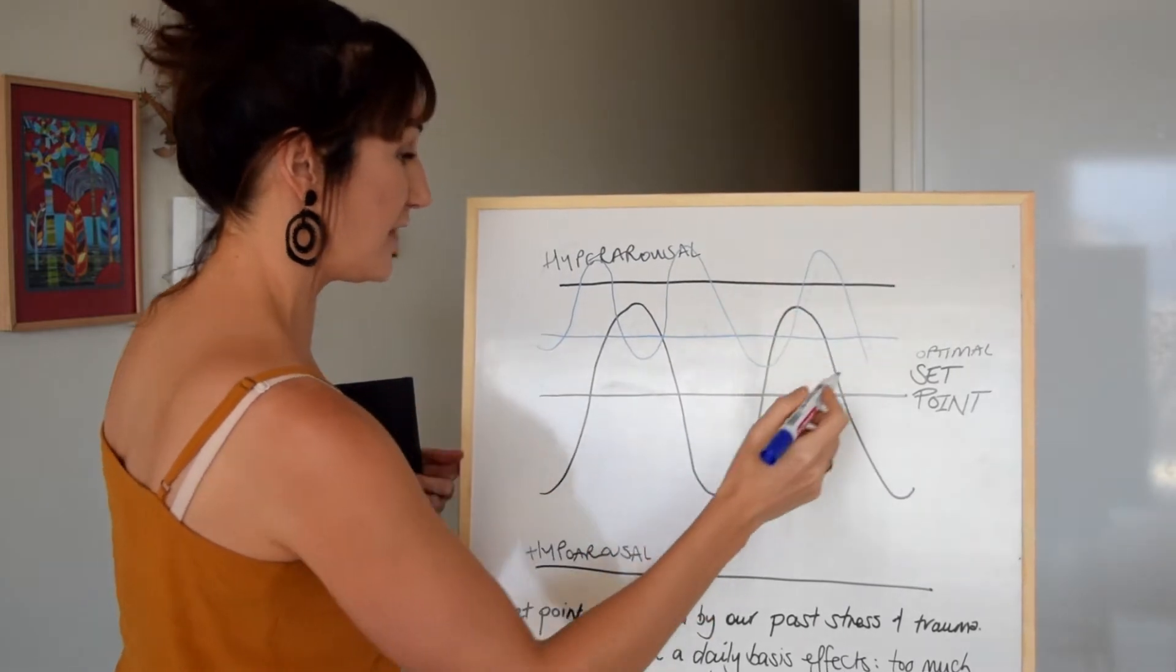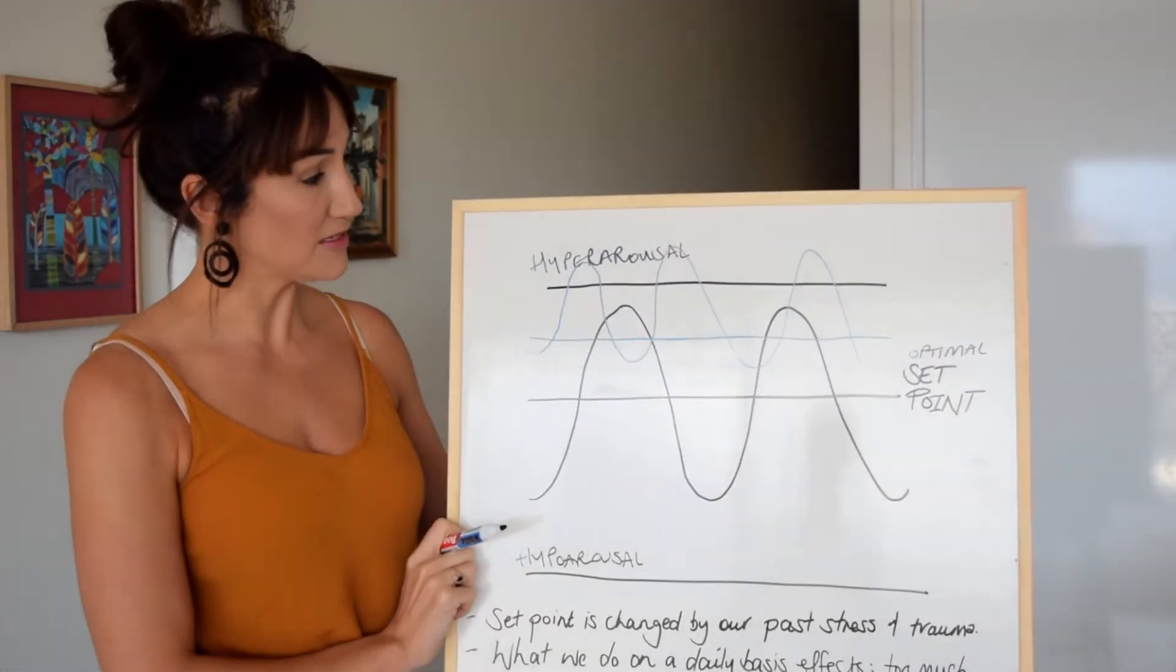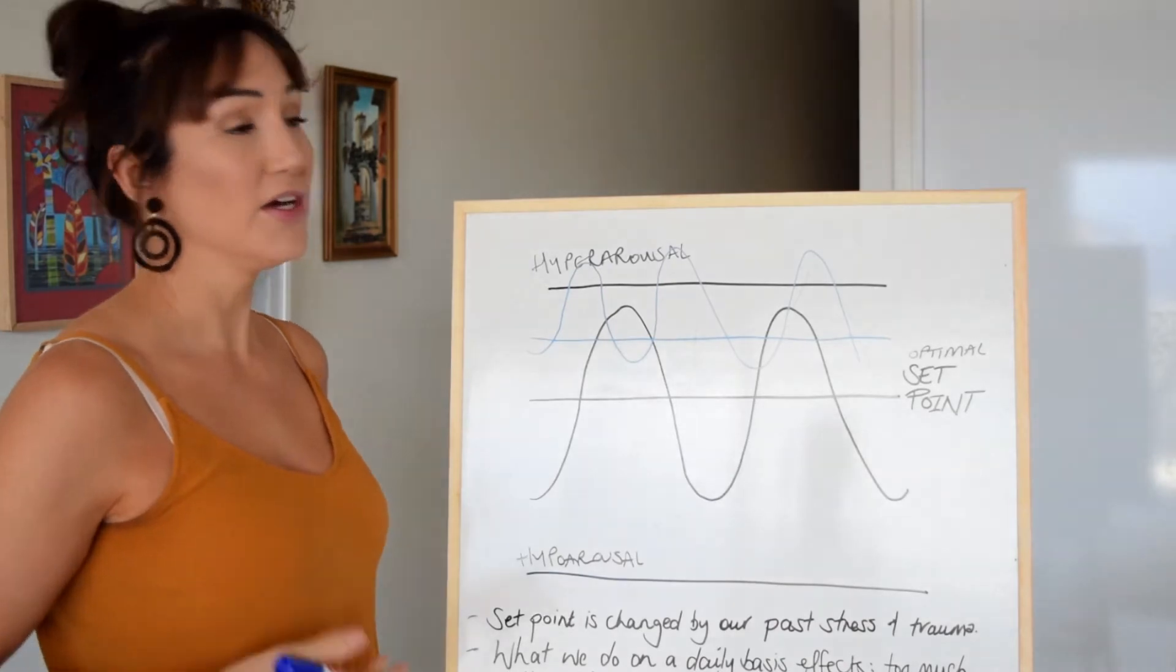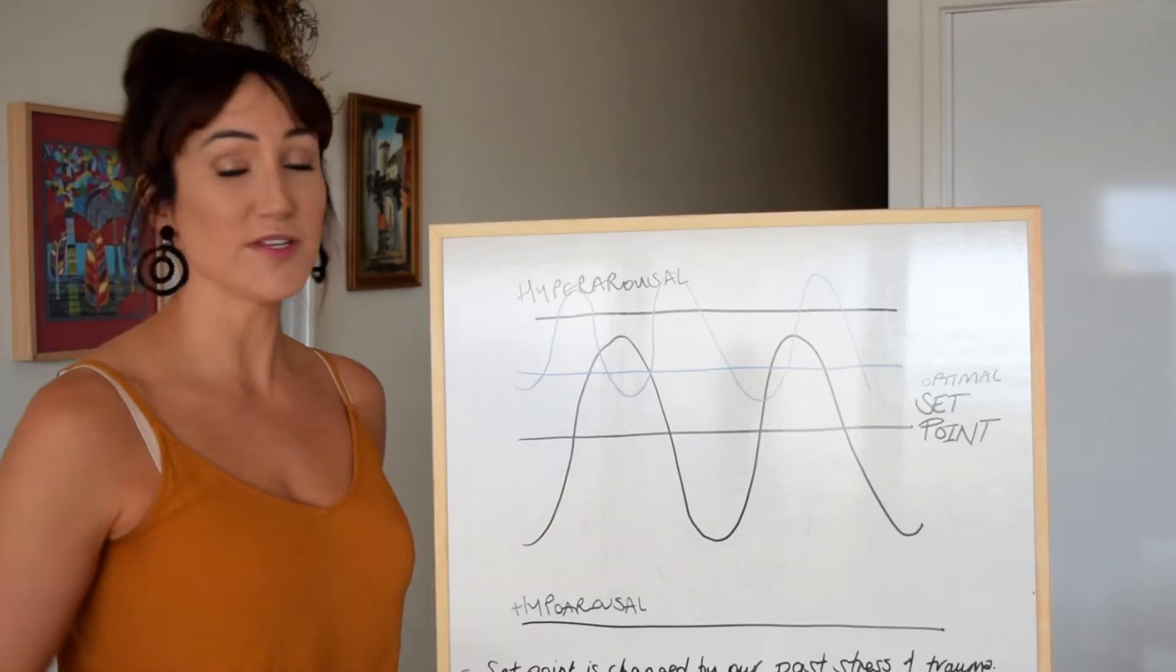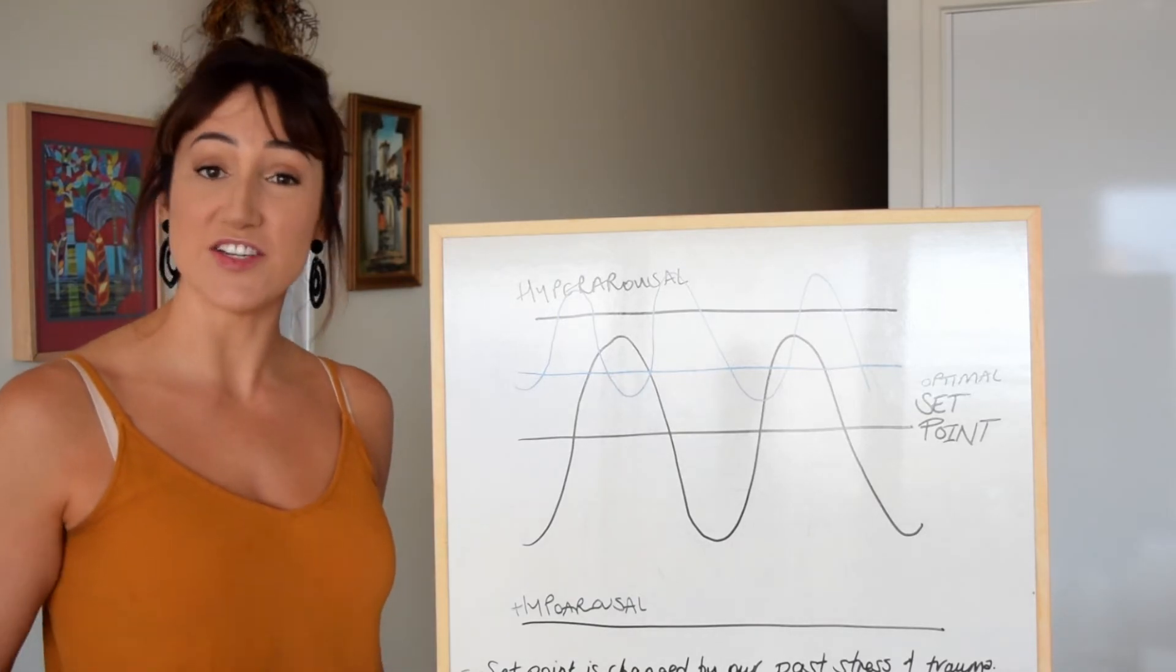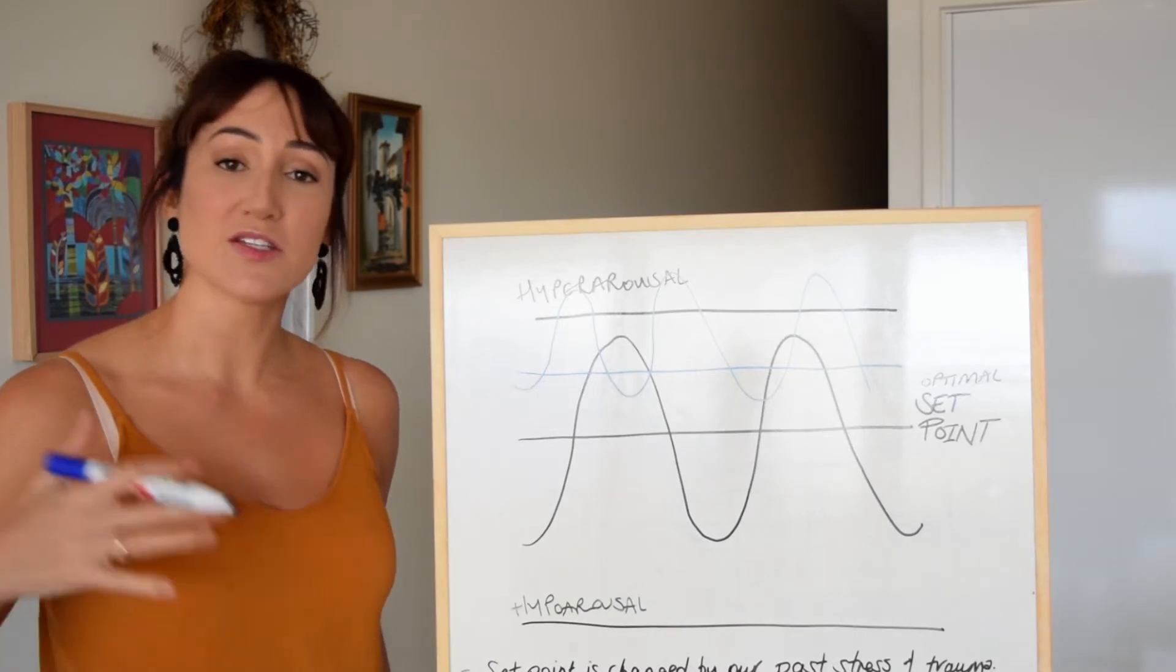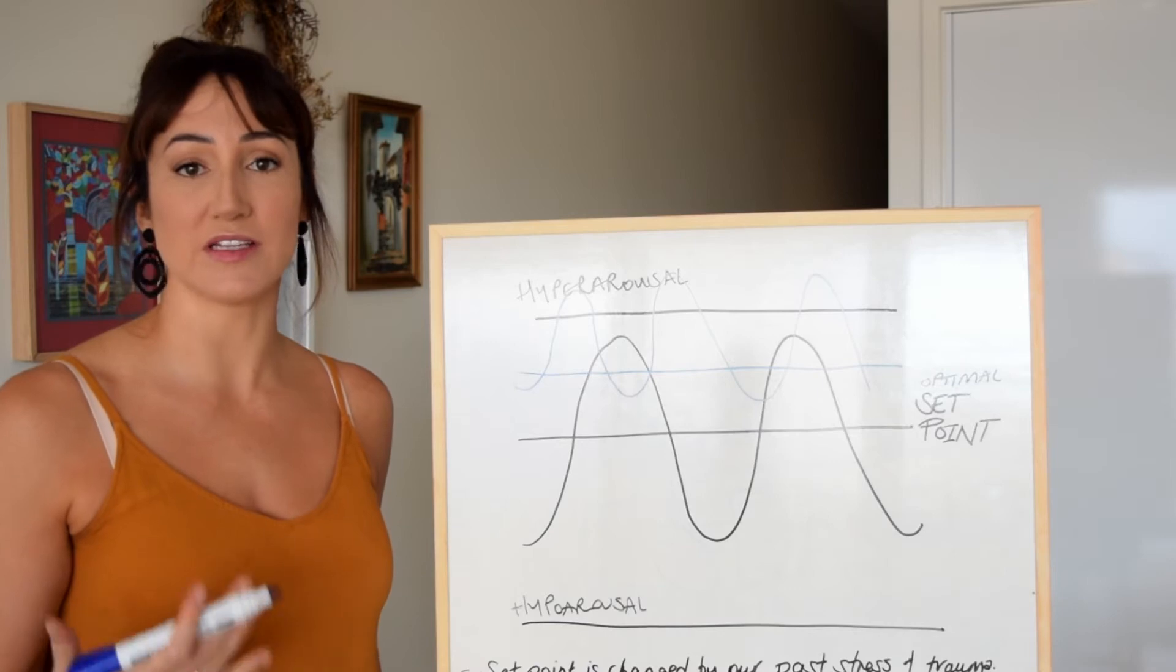Now at this set point, we'll say this is sub-optimal. That means we are more likely to have our physiology in a state closer to fight or flight. That new set point is going to affect our digestive system, our immune system, and our hormones. It's going to move all systems into a state of dysregulation.